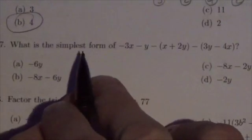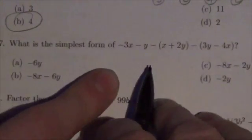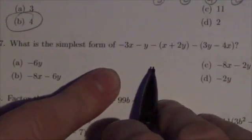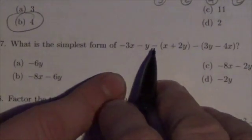Multiple choice number 7. So here we go. We're going to find the simplest form of this expression. This expression is just about distribution of a negative sign.